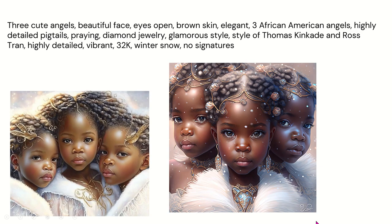Next up, we have these adorable cuties. You can see I added things like 'highly detailed,' 'vibrant,' 'winter snow,' 'no signatures.' Sometimes you will see signatures in your artwork. Just because you type 'no signatures' doesn't mean there won't be any — just like 'no extra limbs' doesn't mean they won't show up because it's AI. We also got a style of Thomas Kinkade and Ross Tran in there. You can see how I'm using more words to get better images.